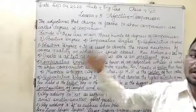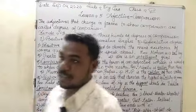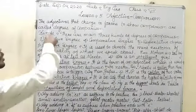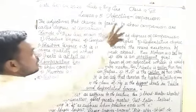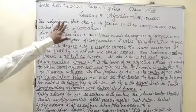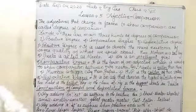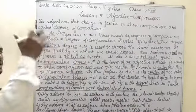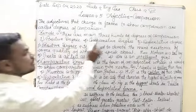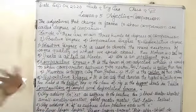Dear students, we are going to review adjective comparison. In previous classes we have studied adjectives, degrees, and comparison. Adjectives that change in forms to show comparison are called degrees of comparison. There are three categories of degree: positive degree, comparative degree, and superlative degree.